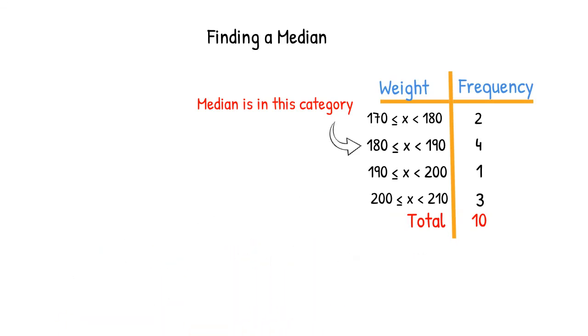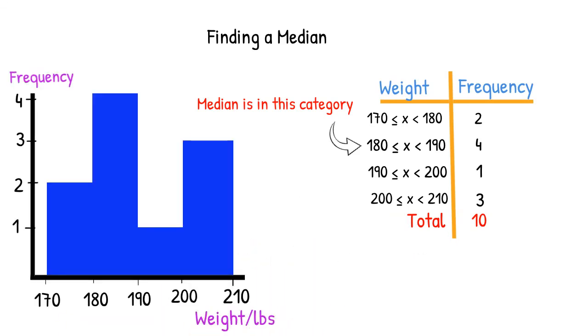Let's take our understanding one step further. If provided with a histogram, we can create a frequency table. From there, we can think of what the original list would look like and find the median.